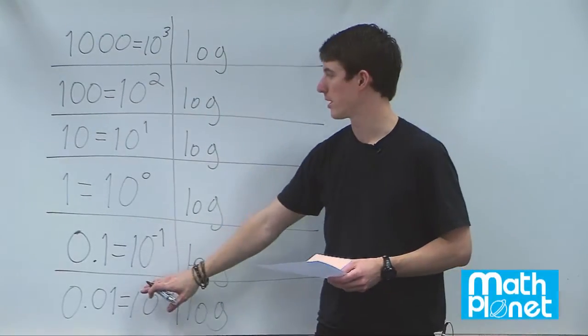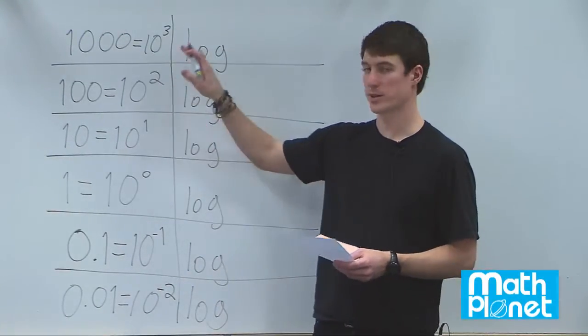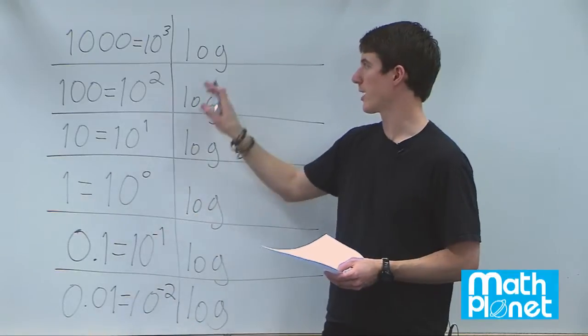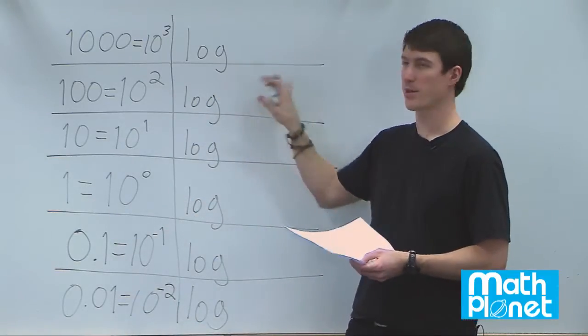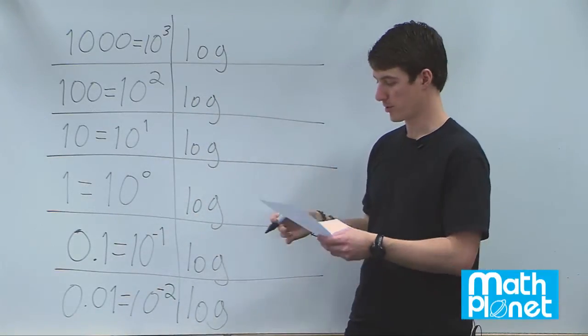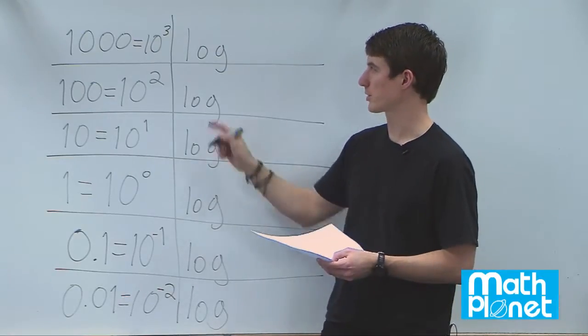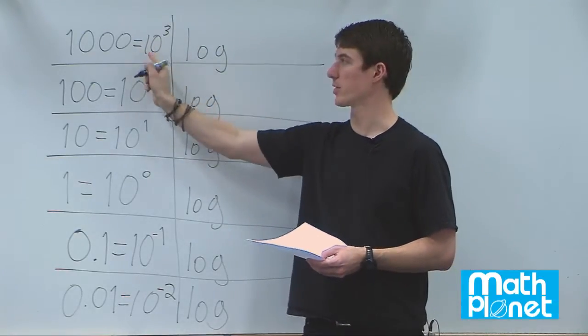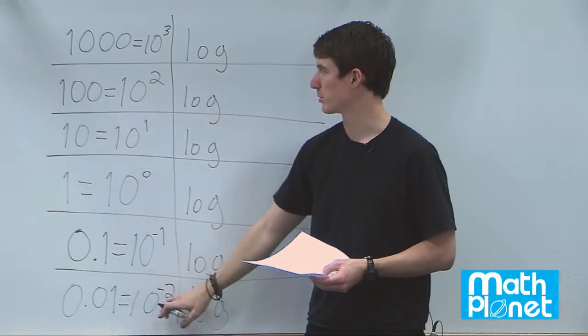Here we have this column of equations. What we want to do is rewrite these as logarithms. So we're going to write another equation but in logarithm form. Basically we're saying what would happen if we took the logarithm of both sides of this equation. So these are all true.